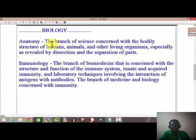So under biology, I will list you the different disciplines and what they do. For example, anatomy, a branch of science concerned with bodily structure of humans, animals, and other living organisms, especially as revealed by dissection. Immunology, the branch of biomedicine concerned with the structure and function of the immune system, innate and acquired immunity.